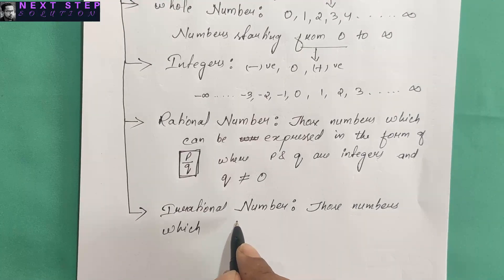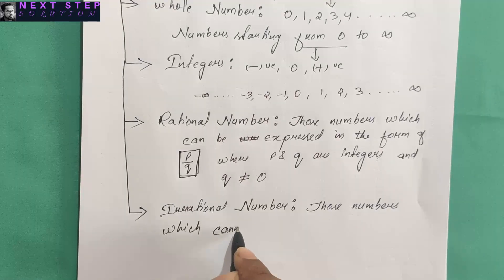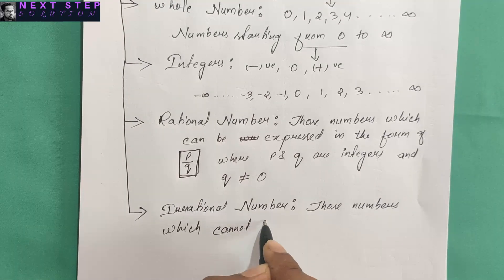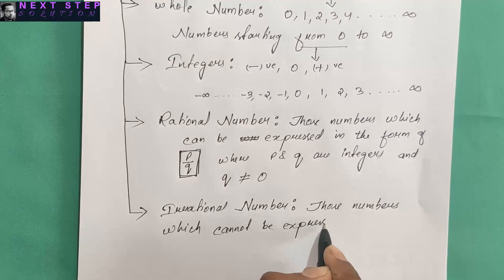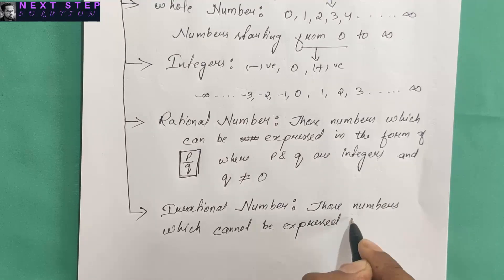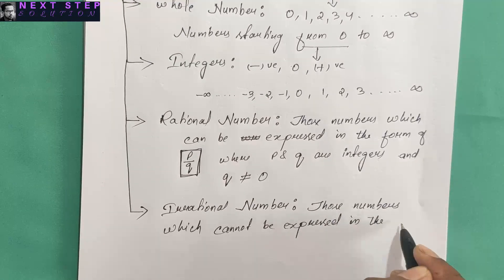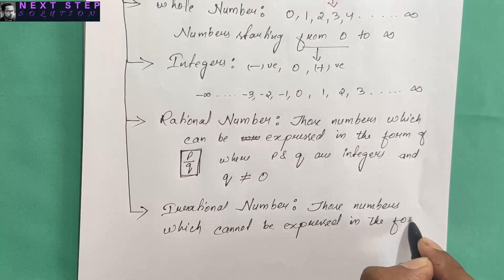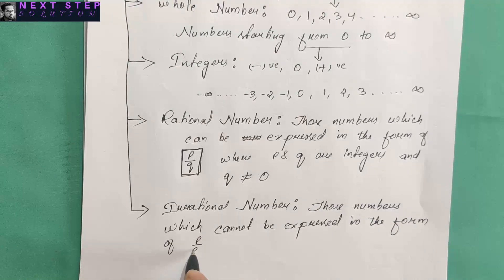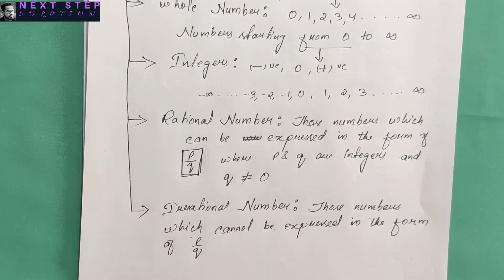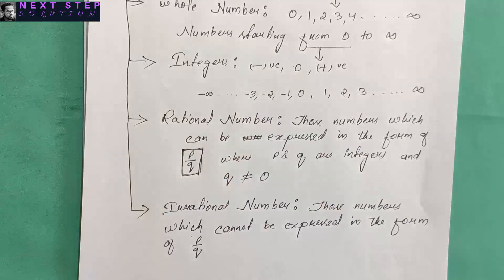The next is irrational numbers. Irrational numbers are those numbers which cannot be expressed in the form of p by q.